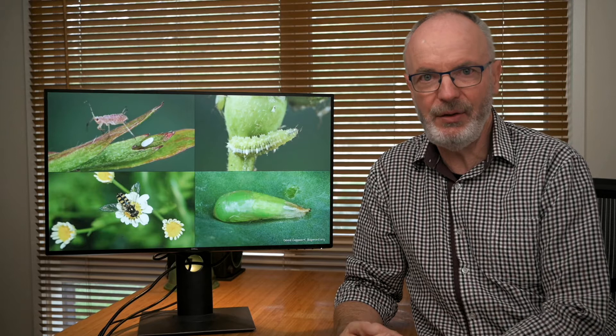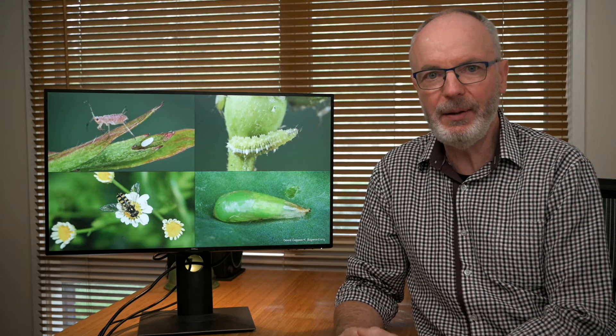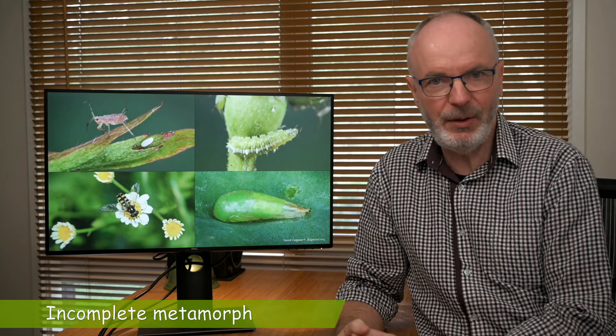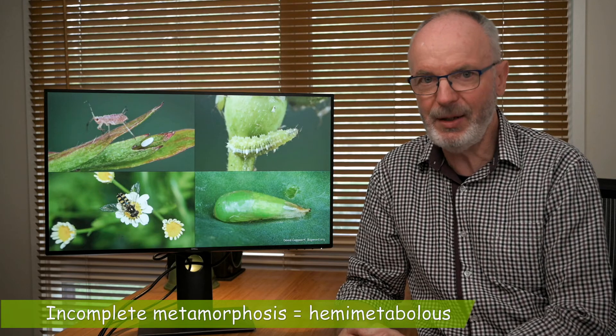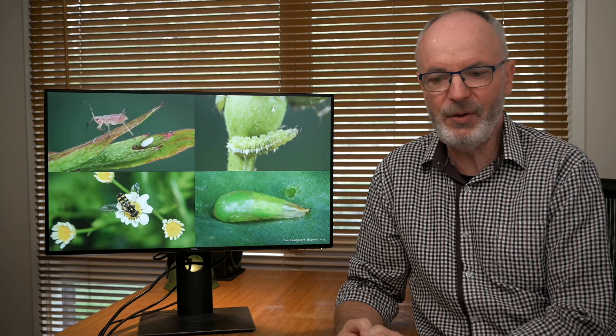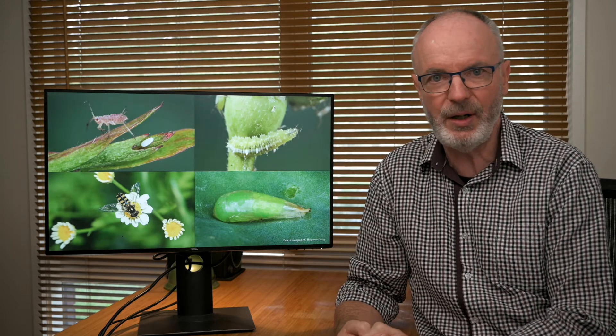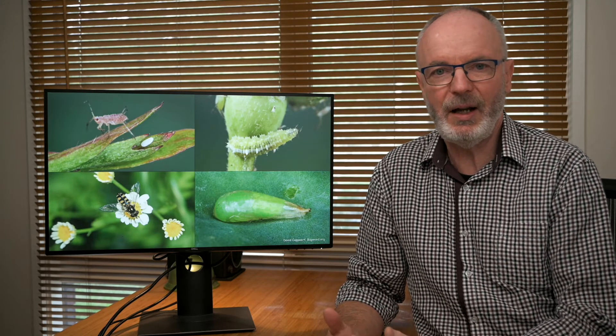As I mentioned, this sort of life cycle isn't the only sort of life cycle. There's the other one that is called incomplete metamorphosis or hemimetabolous. Insects such as bugs and grasshoppers and mantids and earwigs and cockroaches—all these insects have a life cycle of incomplete metamorphosis.